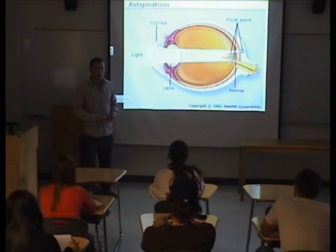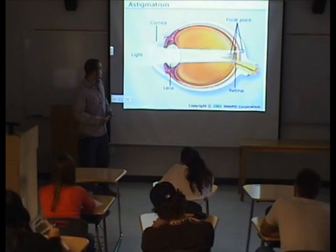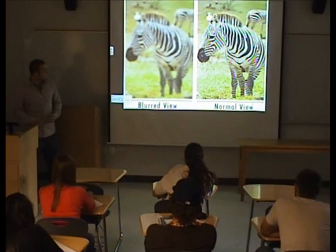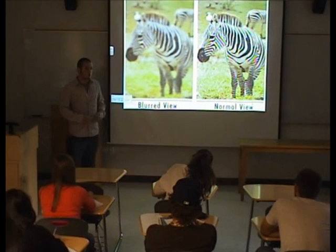An astigmatism in the clear front part of the eye would allow the light going through the lens to have a very cloudy feel, so the focal points would send messages to your brain that would make everything fuzzy. A good example of this is this picture right here — the left would be someone with an astigmatism in the clear front part of the eye, and the right would be a normal person with 20-20 vision.